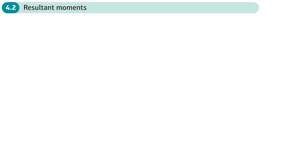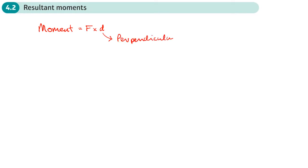This is the second section of chapter four on moments, specifically about resultant moments. In the last section, we saw that we can work out a moment by doing the size of the force multiplied by the perpendicular distance of that force from the pivot point.